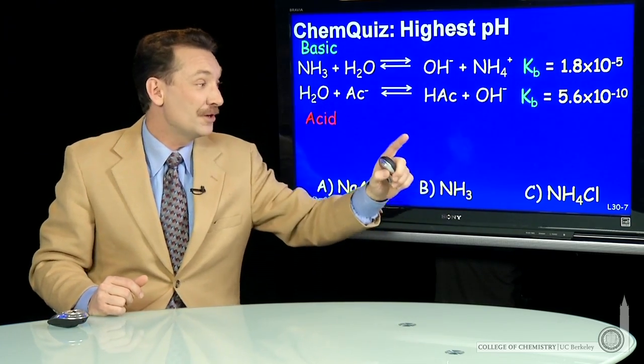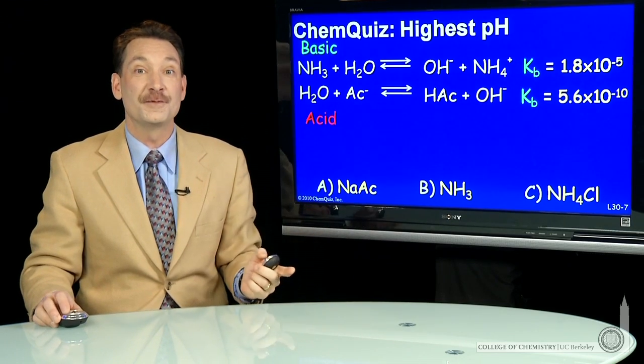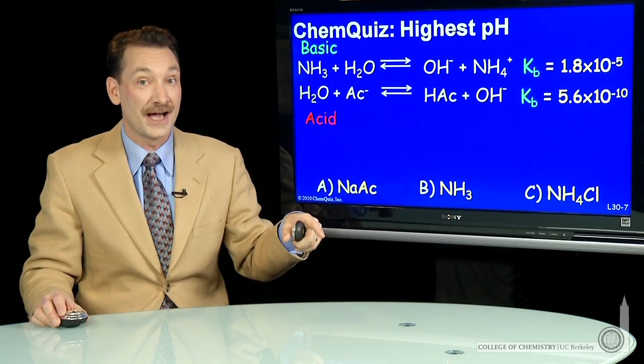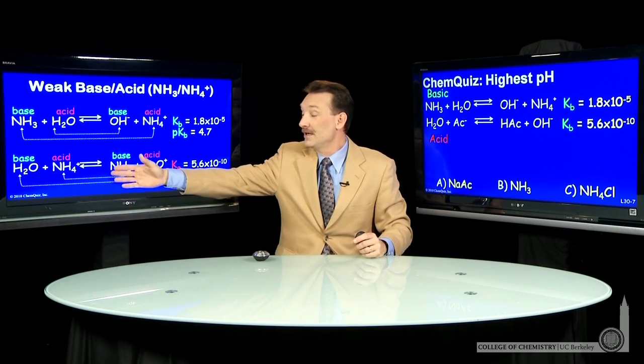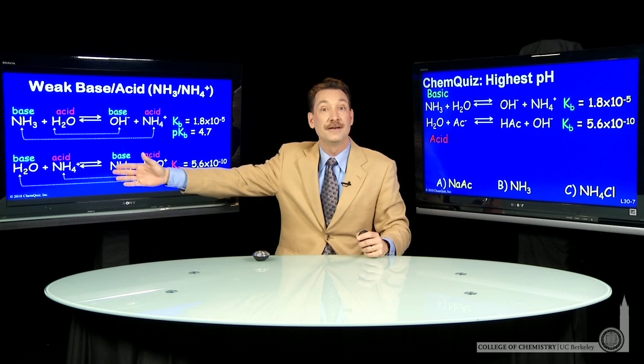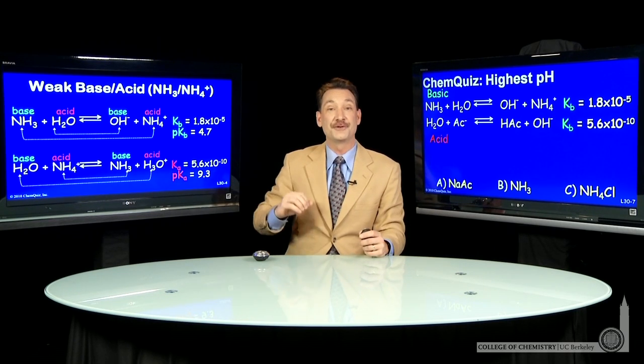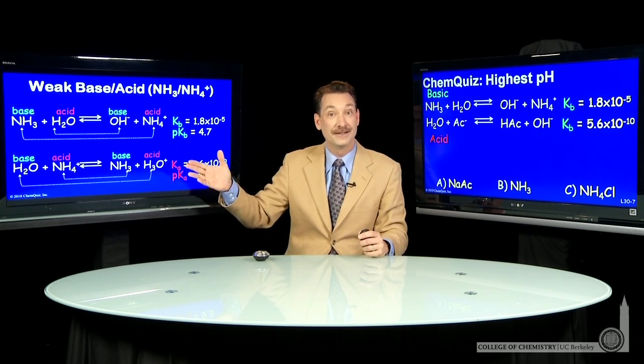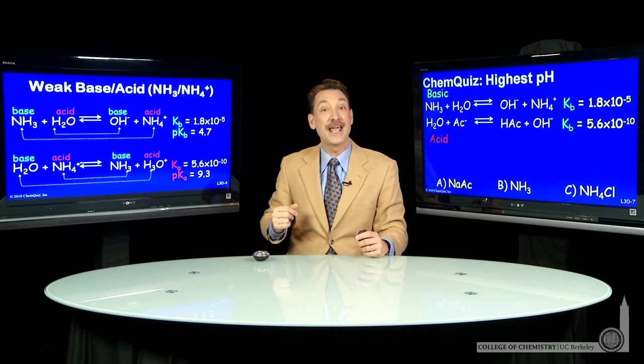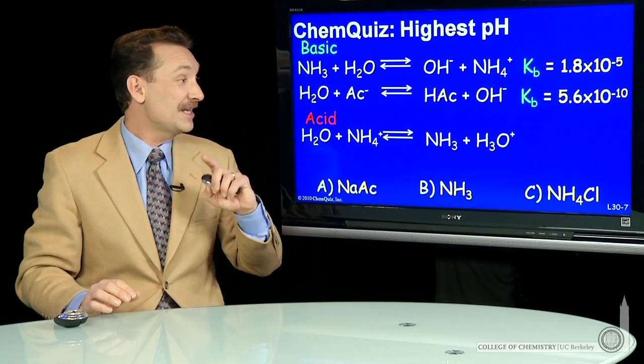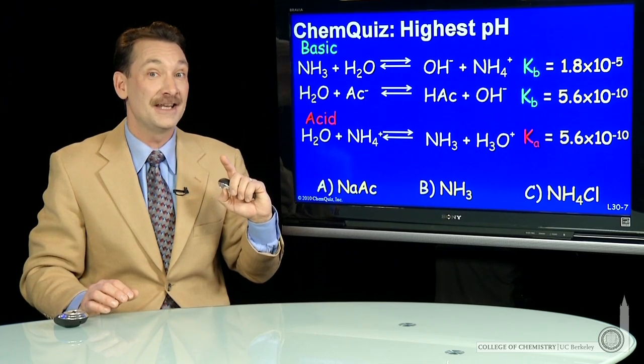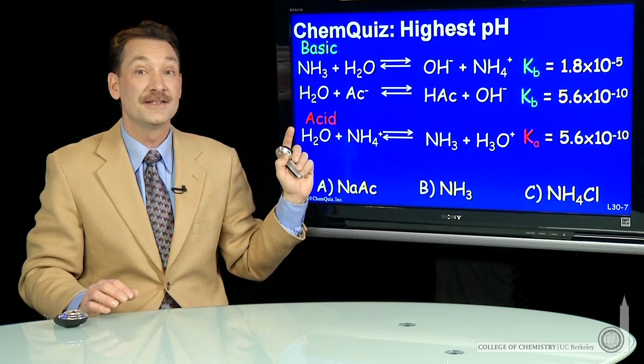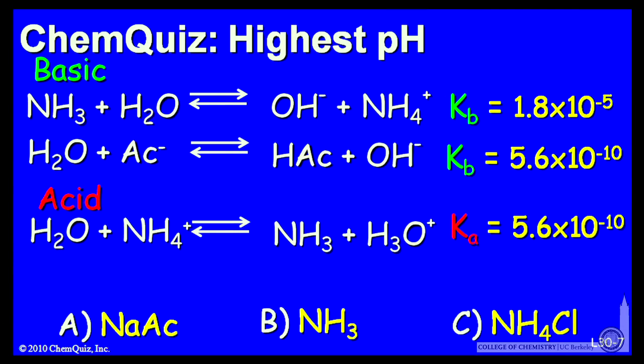The last one we have, NH4Cl. That forms NH4+ ions in solution and Cl-. And we've seen that. Here's NH4+ reacting with water to form H3O+, an acid, and a Ka, 10 to the minus 10. So this last one is an acid, a very weak acid. 10 to the minus 10 is its pKa, is its Ka, but still an acid. So I would suspect this will have the lowest pH. It's an acid.